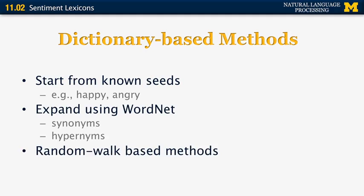Many of these techniques are based on a random walk method. You take a new word — for example, the word sleepy — and perform a random walk on WordNet until you reach one of the known seed words. Then you look at the distance between the current word and all of the known labeled words, and based on this distance, you label it either positive or negative.